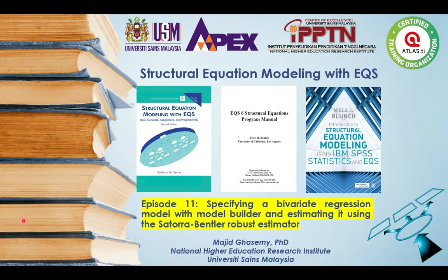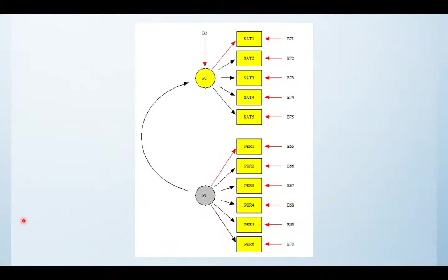Hello everybody, I hope you are doing very good. In this video I'm going to show you how to specify a bivariate regression model and estimate it using the Satorra-Bentler robust estimator in EQS. This is our model — we have one predictor factor which is job performance with six indicators, and one outcome factor which is job satisfaction with five indicators.